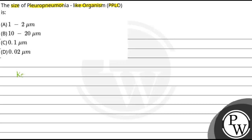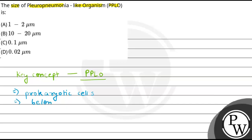If we talk about the key concepts, that will be PPLO. We are going to talk about PPLO here, which we call pleuropneumonia-like organisms. Basically, they are the prokaryotic cells. Here we can write prokaryotic cells. And we can say they belong to the mycoplasma group — this is mycoplasma.